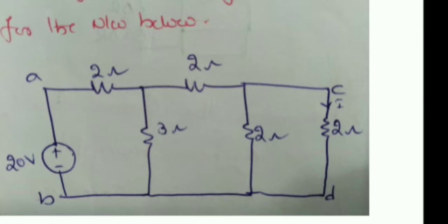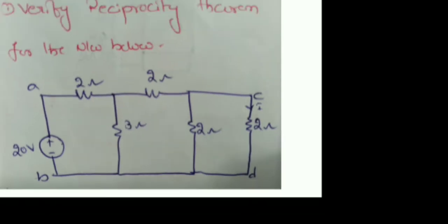If in both cases the ratio of response to excitation — that is, current to voltage — is the same, then this network is following the Reciprocity Theorem.